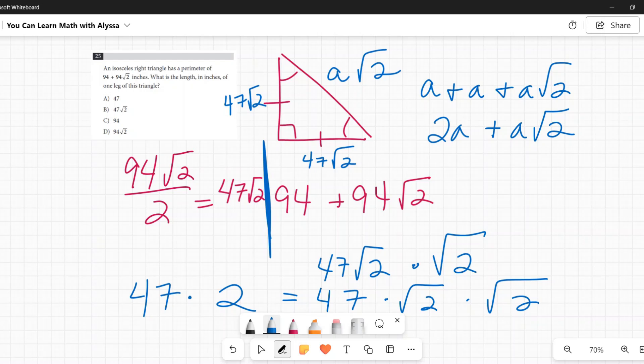So 47 times square root of two times square root of two would be 47 times two, or 94.